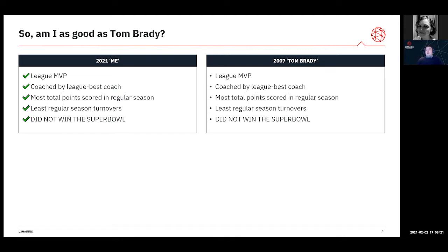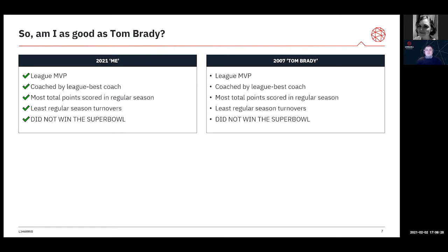So how have we walked into this? One obvious thing is I've cherry-picked some statistics here. But one of the key logical fallacies to be aware of in safety statistics is false equivalency. I've said: well, I just won a game and Tom Brady just won a game, therefore those are equal. What I haven't done is tell you our score margins. We also haven't taken into account that a win for the New England Patriots was worth a lot more than a win for me.